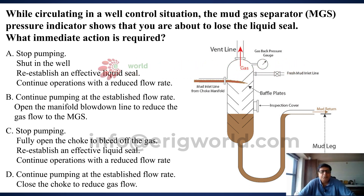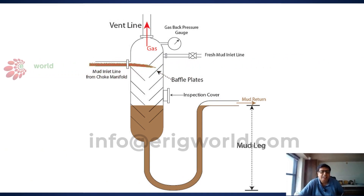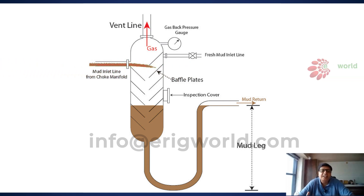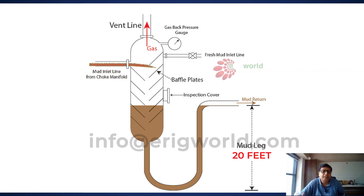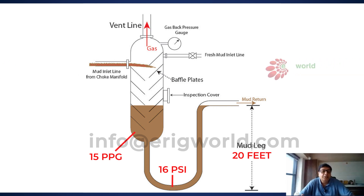First of all, you need to understand what a liquid seal is. The liquid seal is this mud leg — the height of mud with its weight that creates a hydrostatic head. If the height is 20 feet and mud weight is 15 ppg, then this column of 20 feet will create a hydrostatic head of 16 psi. So 16 psi is the seal, or liquid seal.